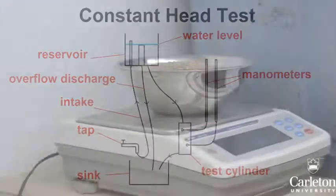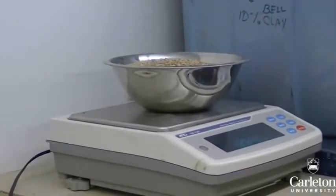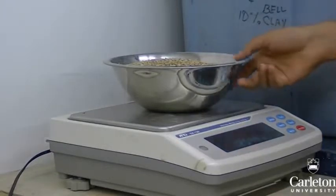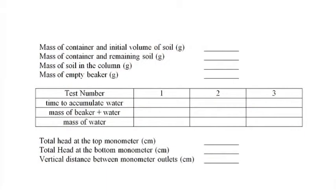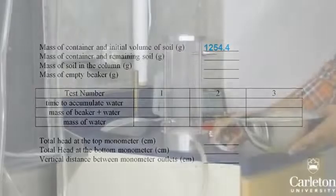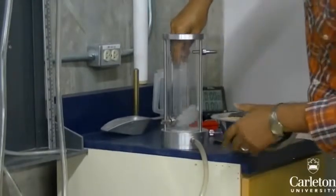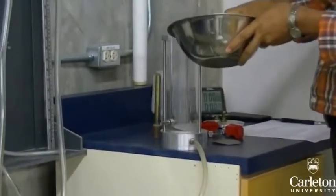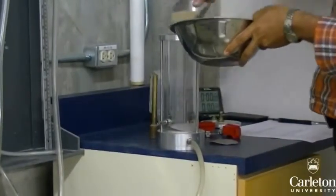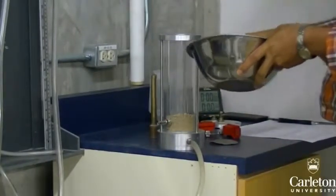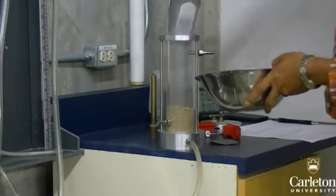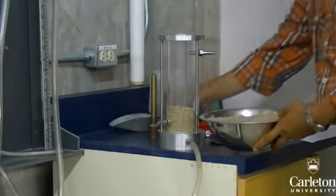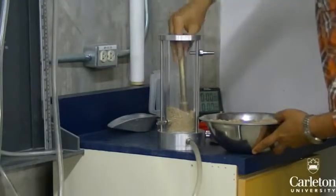First, obtain about 1 kg of coarse soil and place it in a container. This should be enough to fill the test cylinder. Record the mass of the container plus the soil in a table. Place a screen at the bottom of the cylinder — this prevents the soil from being carried out. Fill the cylinder with the soil sample, splitting the soil into about three layers and compacting each layer with a hammer.